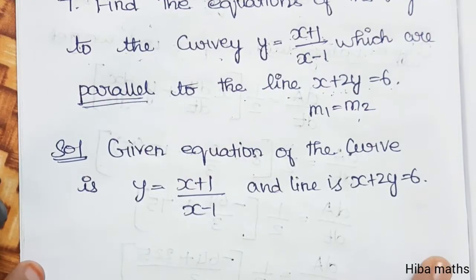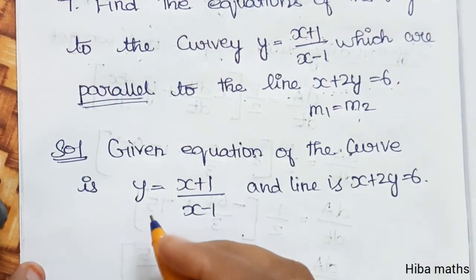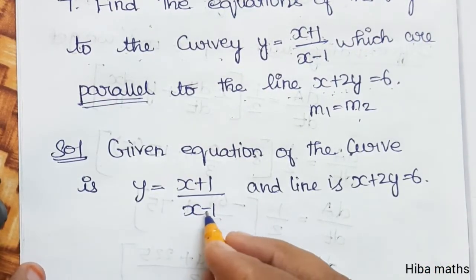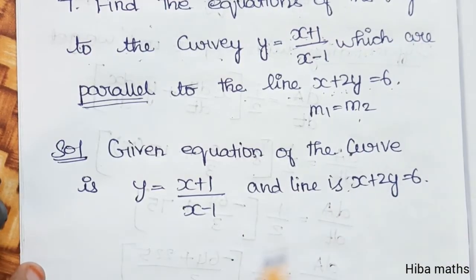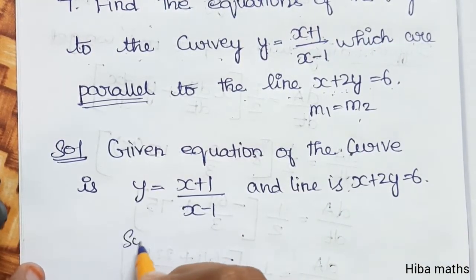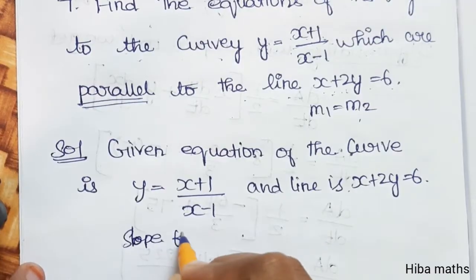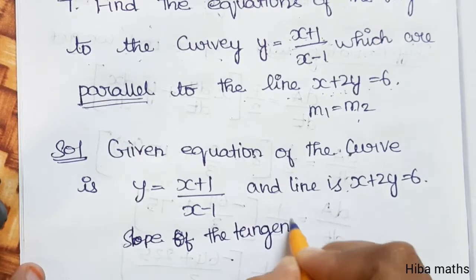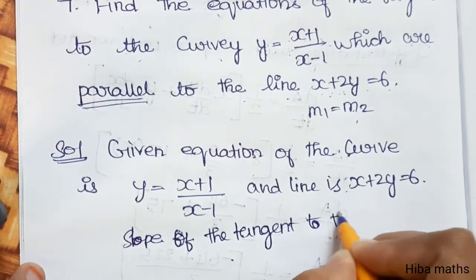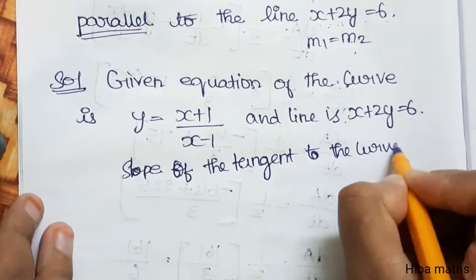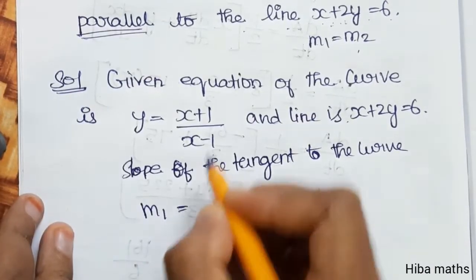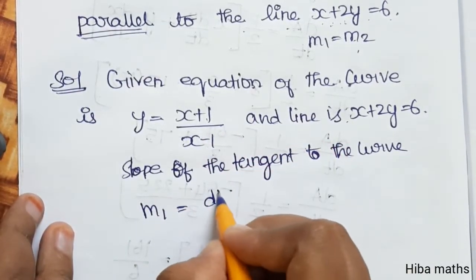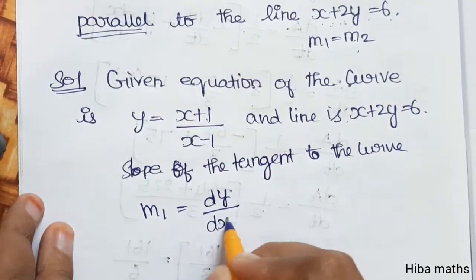This is the concept. Given the equation of the curve y equal to (x+1)/(x-1), and the line is also given. Now let's find the slope of the tangent to the curve — slope of the tangent to the curve. Let's call it m1. Now let's differentiate using dy by dx.